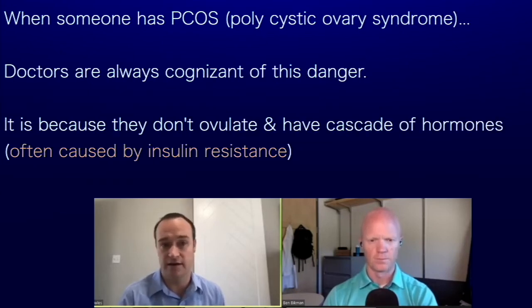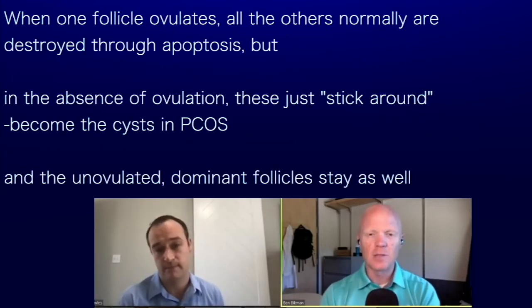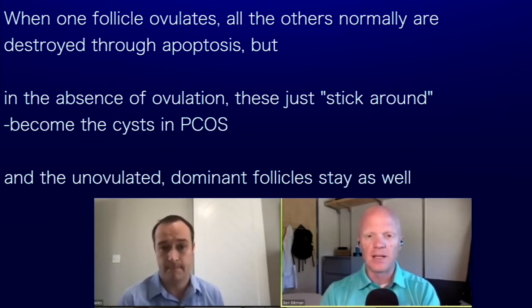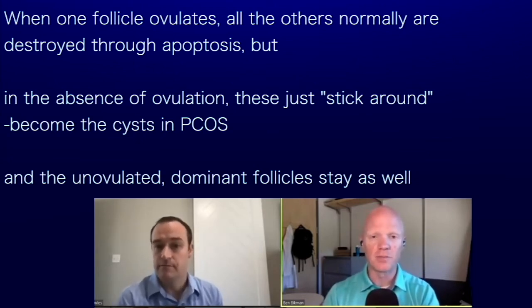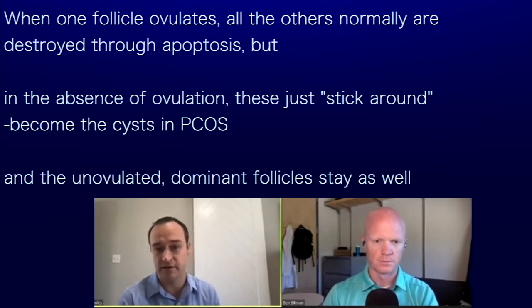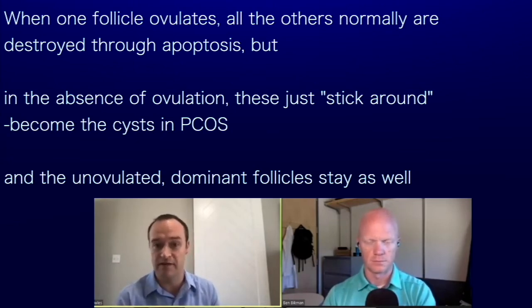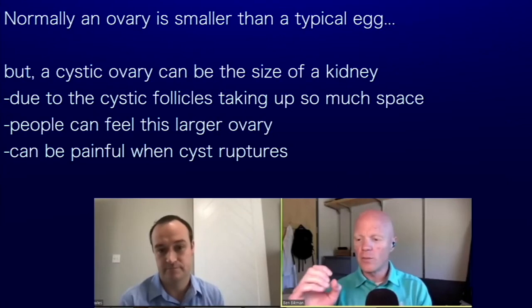Without that ovulation and the cascade of hormones telling a person to either get pregnant or have a period, the follicles stick around and become the cysts that are the prototypical definition of PCOS. Un-ovulated dominant follicles can stick around as well. Some follicles that don't go through apoptosis don't grow very large, but dominant ones do — they just don't ovulate. Some are un-ovulated dominant follicles; some are other follicles that haven't gone through apoptosis.